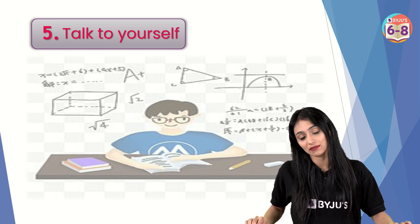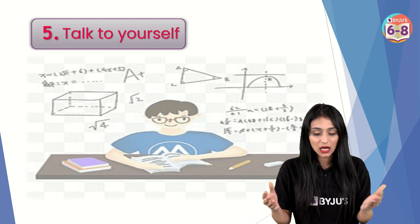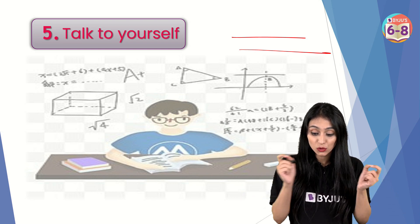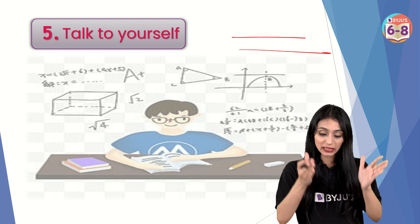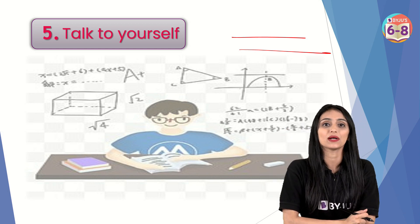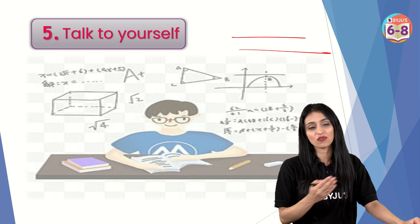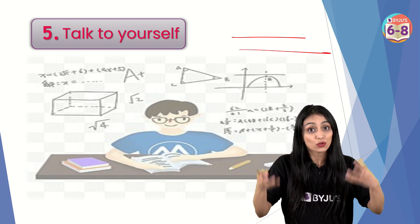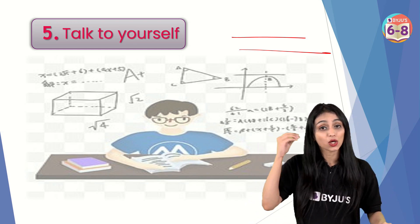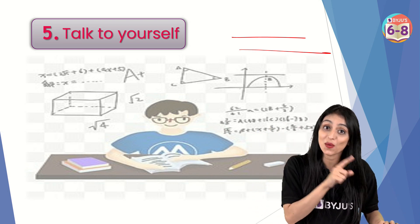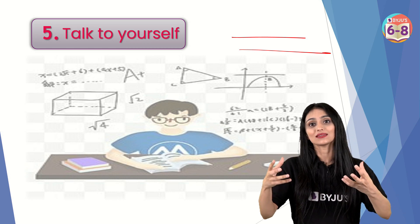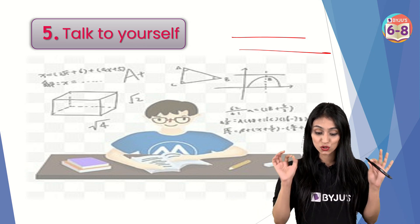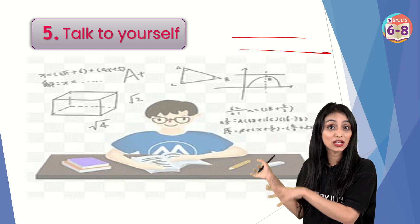Moving to tip number five: talk to yourself. Bahut log ek galti karte hain — aap information ko highlight karte rehte hain. Highlight karne se aapko lagta hai information yaad ho jaayegi. Ya aap dubara se re-read karte rehte hain same information ko. Trust me, aap re-read bhi karte raho — aap ek page ko 10 minute tak bhi padhte raho, tab bhi yaad nahi hoga. Best way to do is: jab aap padh rahe hain, jo bhi information aap padh rahe hain, read it aloud. Jo zyada se bolo, toh apne kaanon mein khud woh awaaz aaye — talk to yourself, khud ko padhaiye, teach yourself. Isse kya hota hai? Jab aapke kaanon mein same awaaz jaati hai, toh aapka brain us information ko process karta hai. So yeh ek tareeqa ho sakta hai, aapke liye ek useful technique hai.